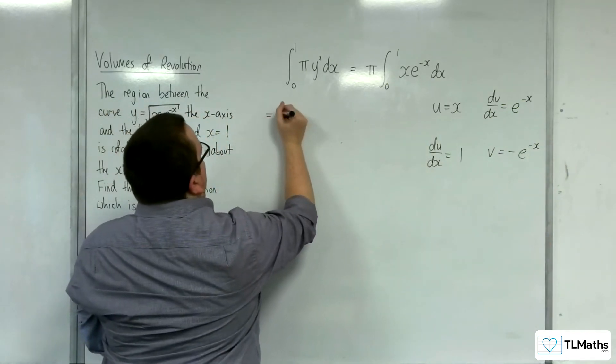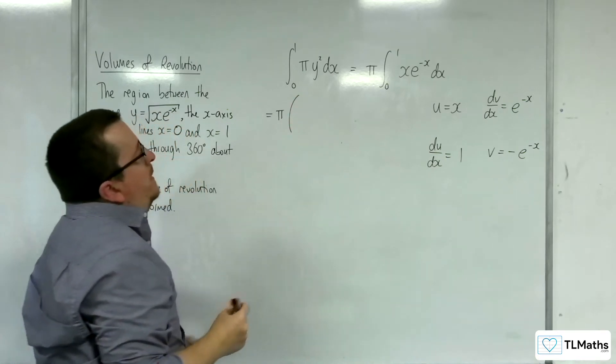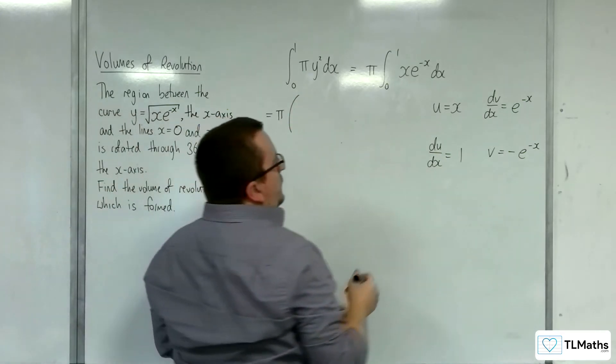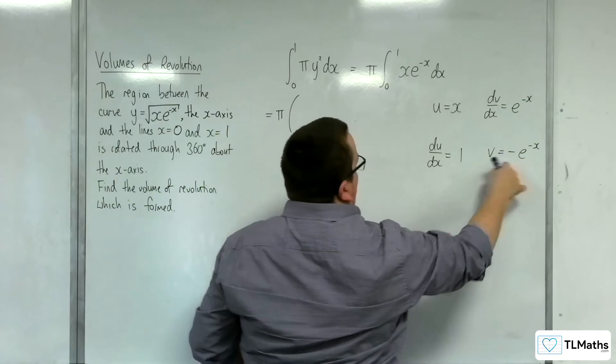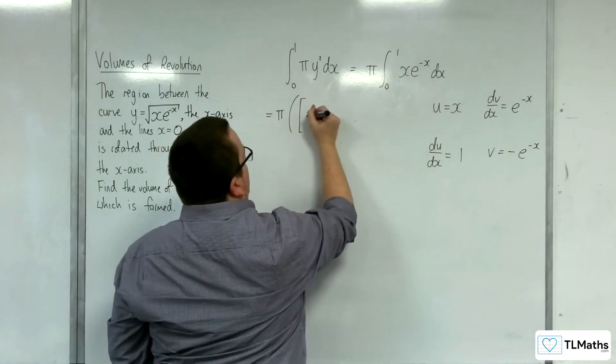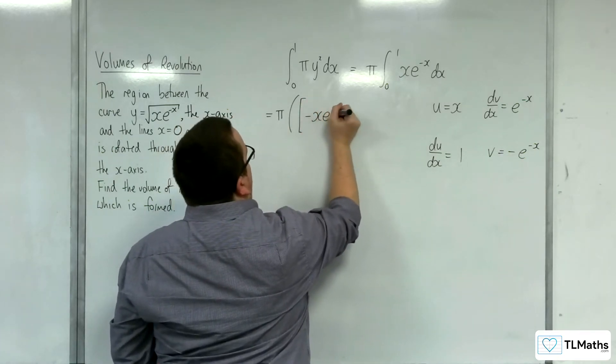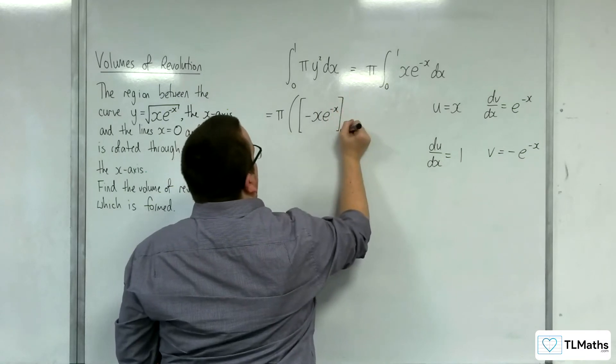So we will have pi times u times v, so x times minus e to the minus x. I'm putting that in a square bracket, so minus x e to the minus x, evaluated between 0 and 1.